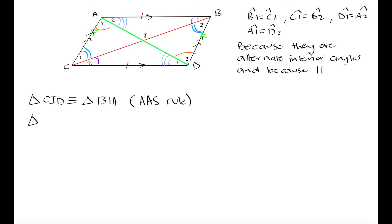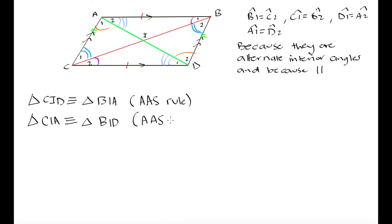By the same logic, triangle CIA is congruent to triangle BID. We can see they have two corresponding angles and one corresponding side equal — side AC equal in length to side BD. So by the angle-angle-side rule, these two opposite triangles are also congruent.